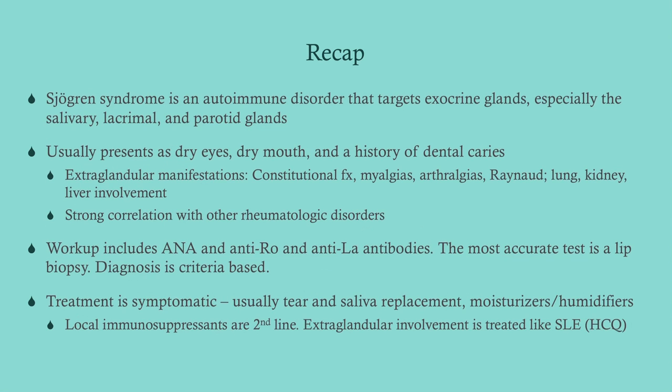To recap: Sjögren's syndrome is an autoimmune disorder targeting exocrine glands, presenting as dry eyes, dry mouth, and a history of dental caries, especially in patients with established rheumatologic disorders like lupus or RA. Workup includes ANA, anti-Ro, and anti-La; the most accurate test is a lip biopsy. Treatment is symptomatic — tear and saliva replacement, moisturizers, humidifiers; extra-glandular involvement is treated like lupus with hydroxychloroquine and NSAIDs.